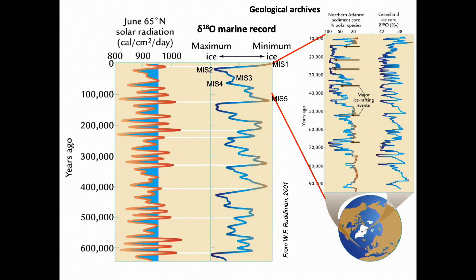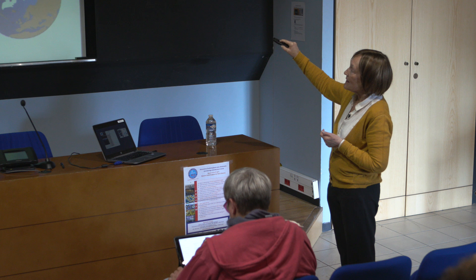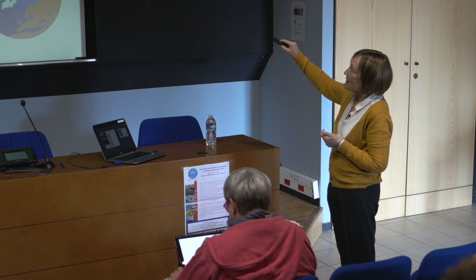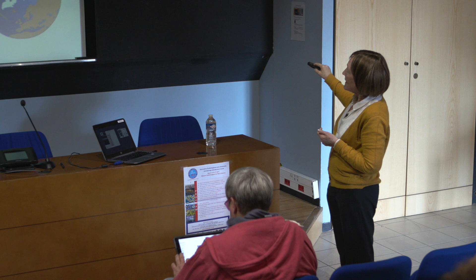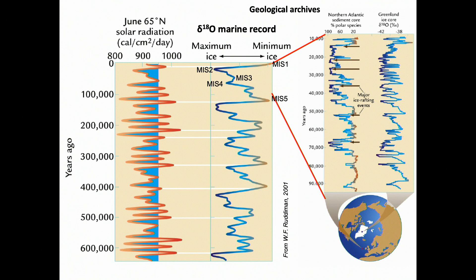We cannot think anymore that the climate is changing in a very gradual manner — not at all. In the past, the climate has changed very abruptly. Here you can see the curve of the oxygen isotopic ratio of the water indicating changes in temperature in Greenland during the last glacial period, more or less between 80,000 and 12,000 years before present. The cyclicity of this variability is between 1,000 and 2,000 years, so it cannot be controlled by changes in insolation.